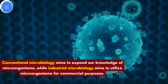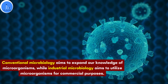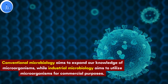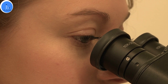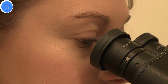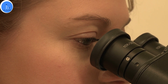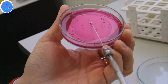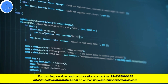Conventional microbiology aims to expand our knowledge of microorganisms, while industrial microbiology aims to utilize microorganisms for commercial purposes. Conventional microbiology typically involves laboratory research, while industrial microbiology involves scaling up the processes for large-scale production. And with advancing technology, both in the wet lab and dry lab, it also utilizes data-driven approaches.